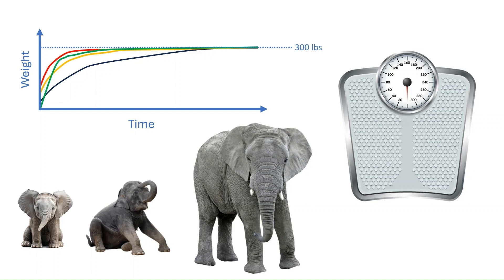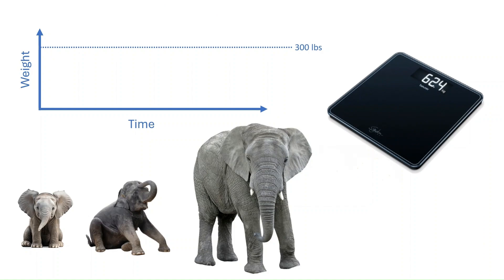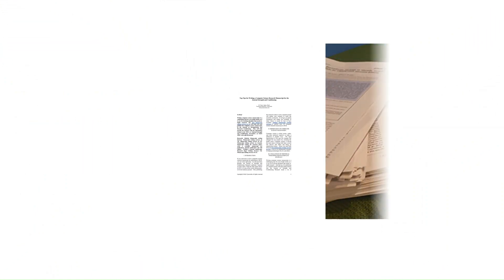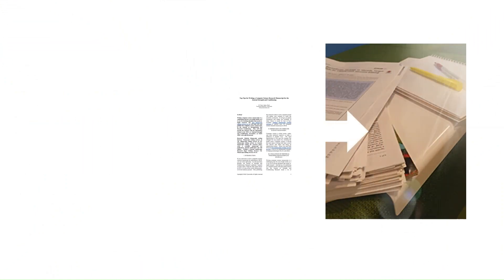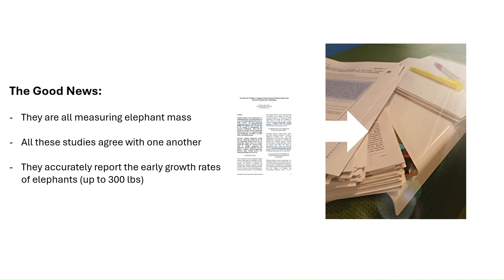So I go ahead and publish my findings. Another person reads this and thinks it's nonsense, so they buy a better bathroom scale and redo the study to prove me wrong — and they're surprised that the data they collect largely agrees with what I reported. So now, instead of one study, we have multiple studies all reporting similar results, and we're reaching some form of consensus.